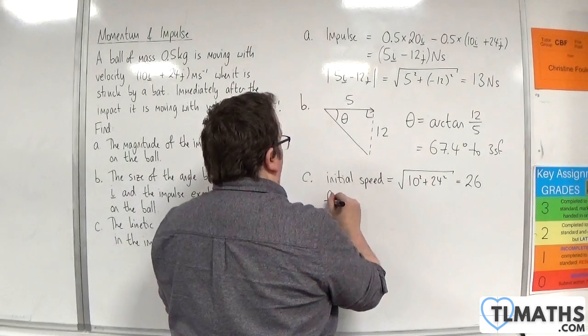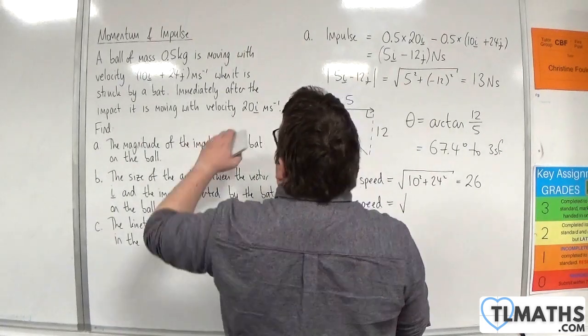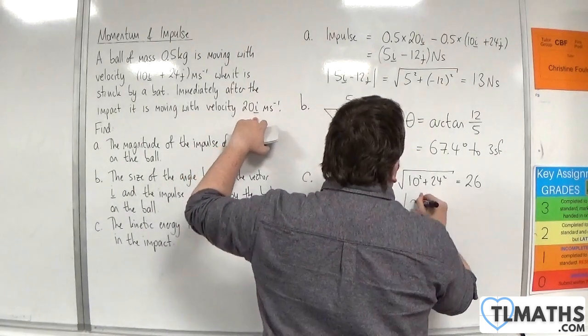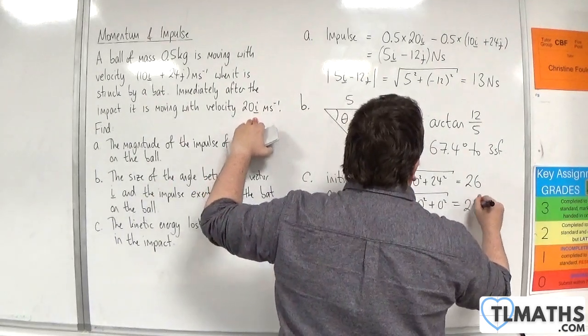And the final speed is going to be the square root of, well, it's just the length of that one. So it's 20 squared plus 0 squared. Of course that's going to be 20 metres per second.